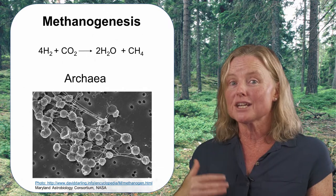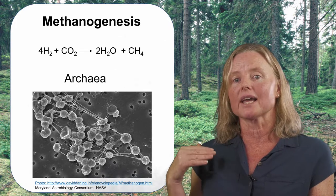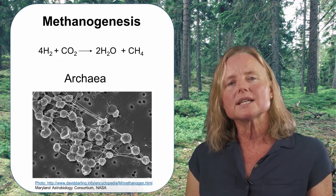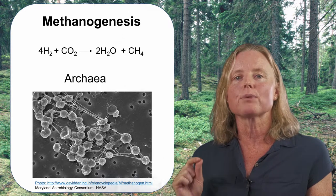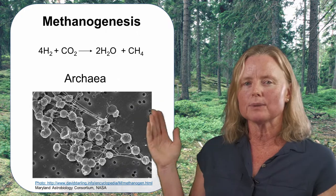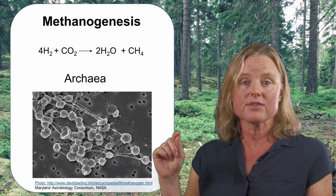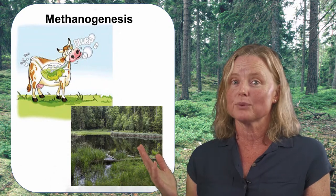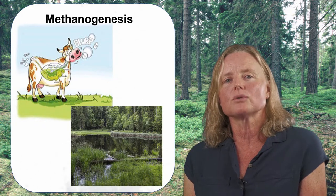Fermentation is not the only anaerobic process that matters in decomposition. Other microorganisms belonging to the archaea are capable of using byproducts of fermentation to gain energy, in a process that results in the production of methane gas. These organisms are known as methanogens and carry out the process of methanogenesis. In a simple example, the organism uses hydrogen as an electron donor to reduce carbon dioxide into methane and water. Perhaps the most famous example is the rumen of cows, where fermentation and methanogenesis help break down grass and result in methane-rich cow burps.